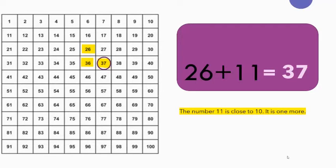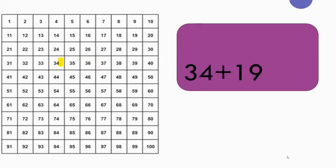So we use the near multiple of 10 to help us solve this sum. Now if we have 34 plus 19, which is the near multiple of 10 in this sentence? We have 19 which is close to 20.